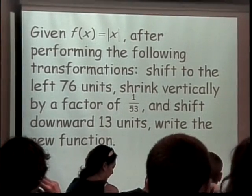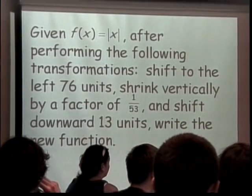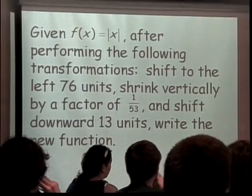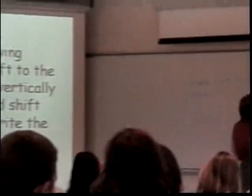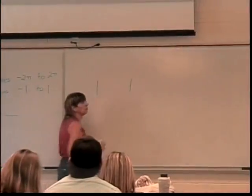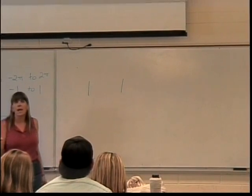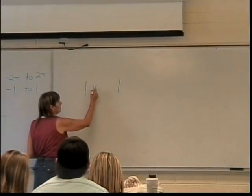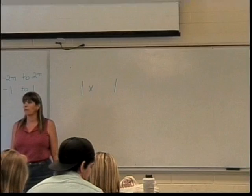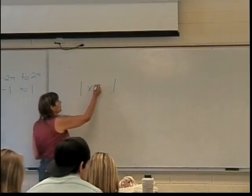Horizontal or a horizontal thing? Horizontal. Horizontal things are inside the function, so that means it needs to be inside my absolute value bars. So I'll need an X because I can't lose the X. And then how do I shift left? Plus 76.